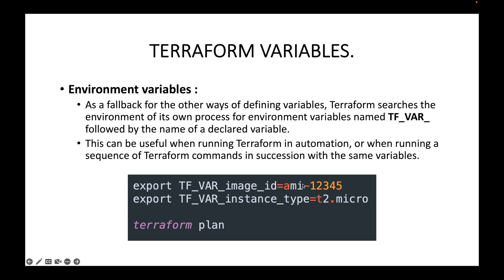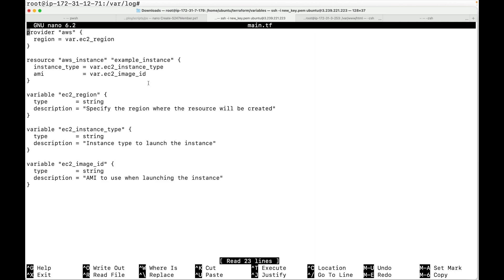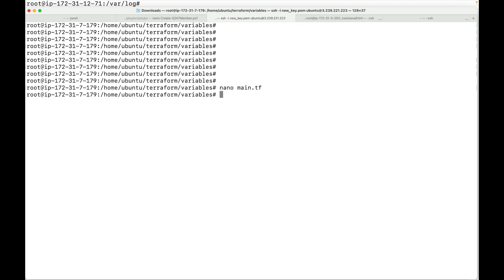You can declare your variables within your environment and Terraform will search for values there. The format is TF_VAR_<variable_name> equals the value. This can be useful when running Terraform in automation or when running a sequence of Terraform commands in succession with the same variable. In the demo, a Terraform configuration file has been set up with variables declared but no default values.